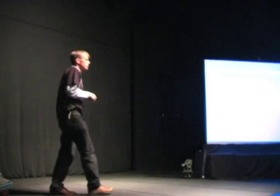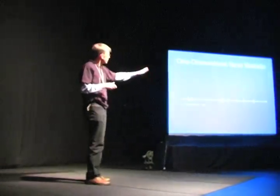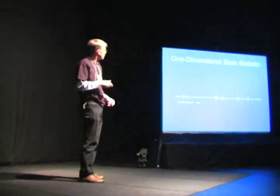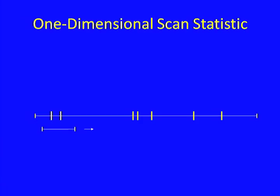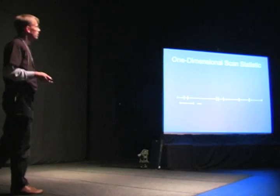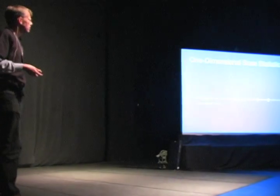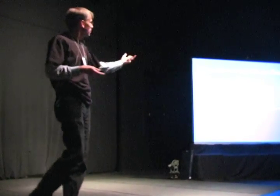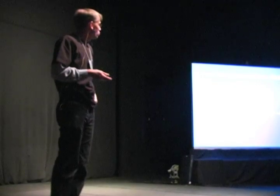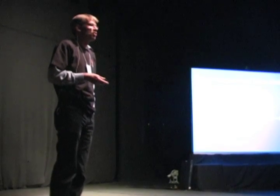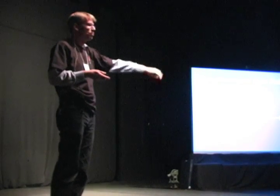A one-dimensional scan statistic works like this: we have a line with some events on it, and we drag a window along the line to see if at any point there is a cluster. In this case, three would be the biggest cluster. Then the statistical question is: is it likely to find three events so close to each other on a line if they were just randomly distributed?